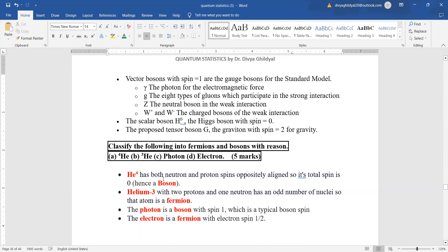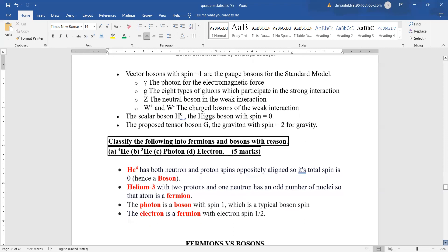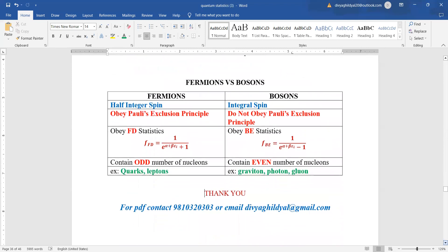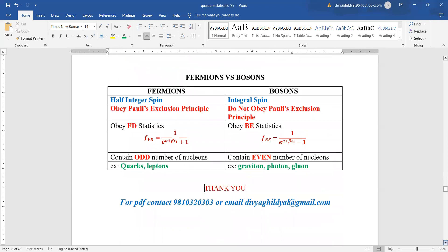He4 has both neutron and proton spins oppositely aligned, so its total spin is zero. Hence it is a boson. Helium-3 has two protons and one neutron, has an odd number of nuclei, so it is a fermion. Photon is a boson again with spin one. Electron is a fermion with electron spin equal to half. So you saw that with the help of spin number also how easily we can differentiate between fermions and bosons.